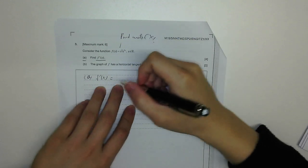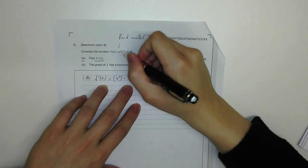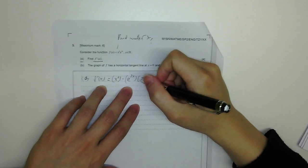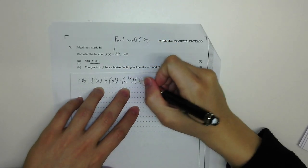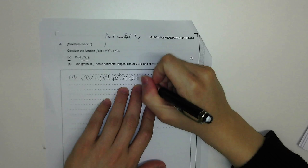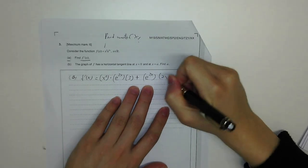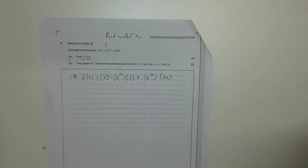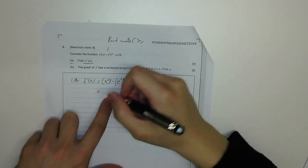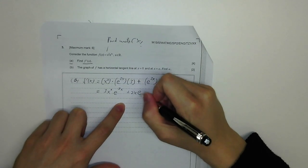So the product rule: we copy the first term and multiply the differentiation of the second term. How to differentiate e^(3x)? It's e^(3x) times 3. We just copy the whole thing and multiply the differentiation of the power. Plus copy the second term and differentiate x² — the first term — which is 2x. So that means 3x²e^(3x) + 2xe^(3x).